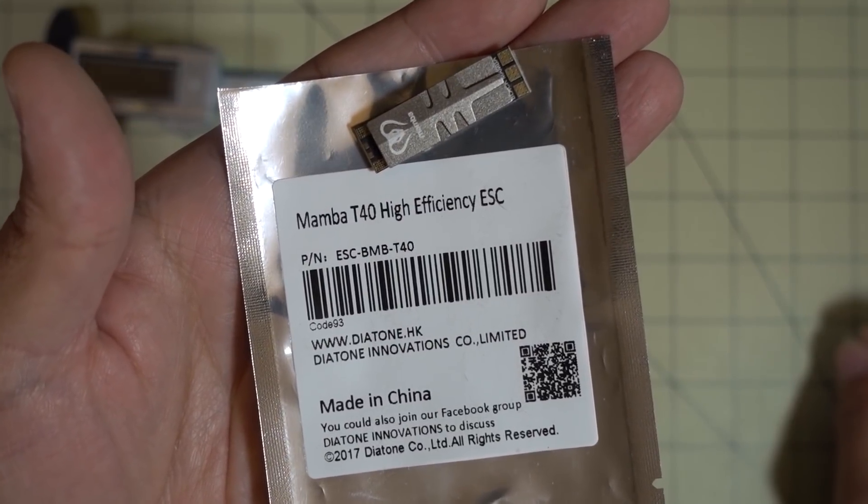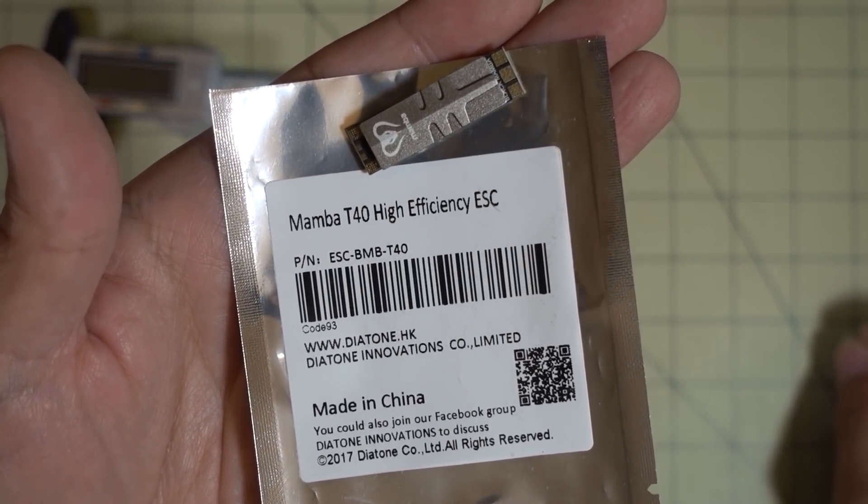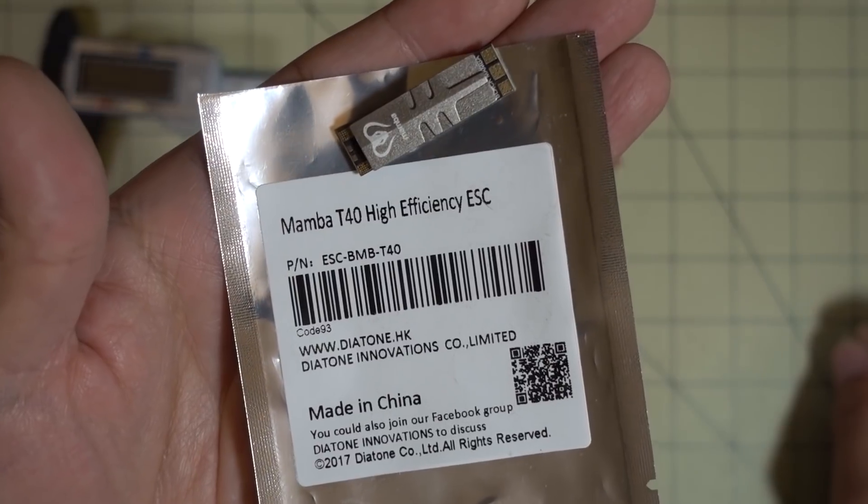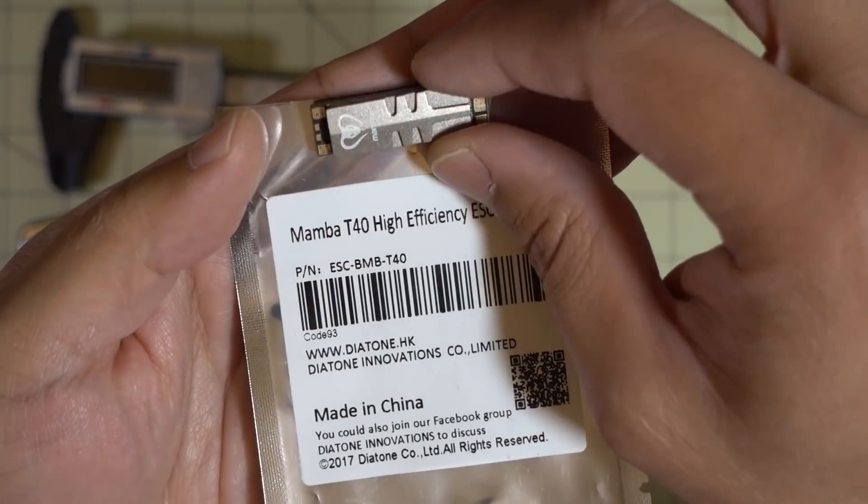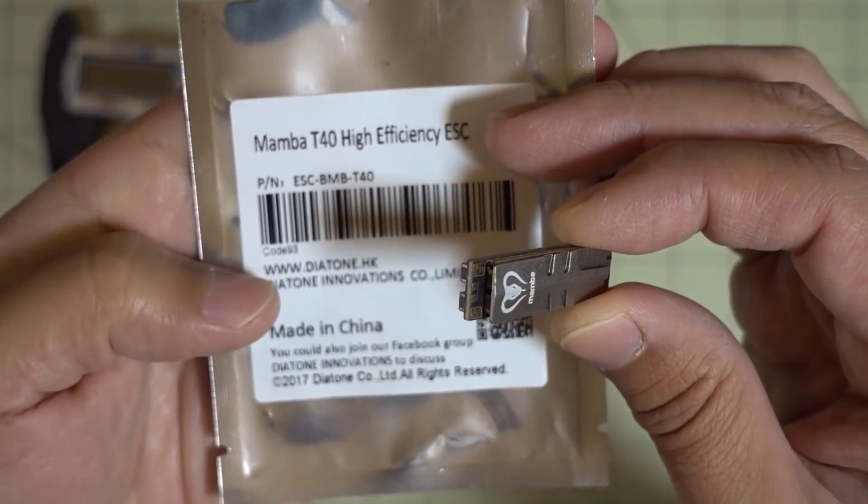Hey guys, so a quick video here today on the new Diatone Mamba T40 ESC. This is a BLHeli S ESC, not a BLHeli 32. It's a 40 amp ESC and bursts to 50 amps up to 10 seconds.